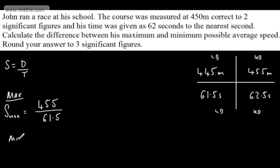For the minimum, which I'll call S_min, that is the shortest distance in the longest possible time. So that's 445 divided by 62.5.